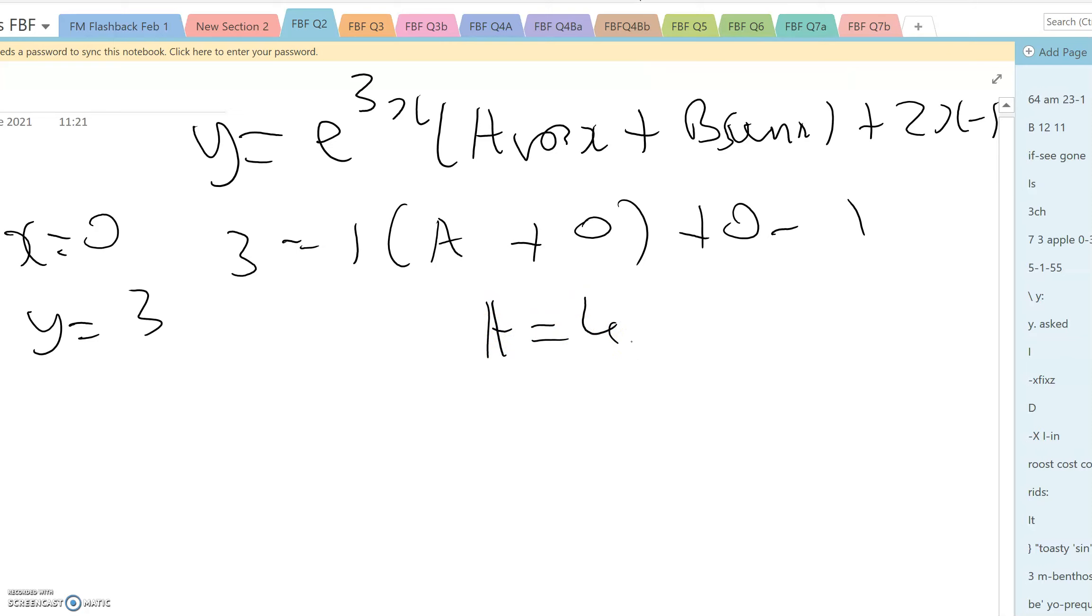Using the second boundary condition y is 4 e to the 3 pi over 2 plus pi minus 1. Outside of the bracket is e to the 3 pi over 2. Cos pi over 2 is 0, sin pi over 2 is 1.